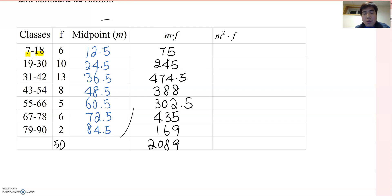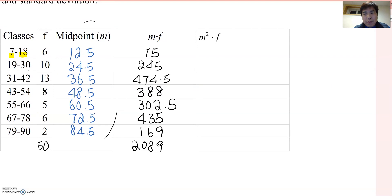So now we are ready to find sample mean. So sample mean means total value of data divided by total number of data. So X bar becomes 2089 divided by 50. If you do it, then you will get 41.78.